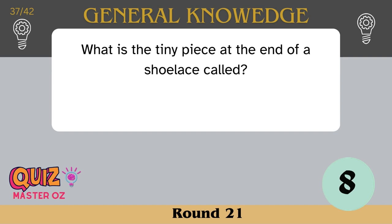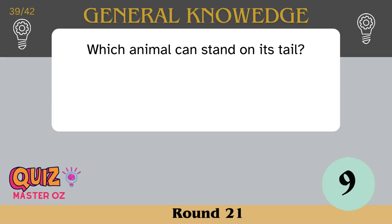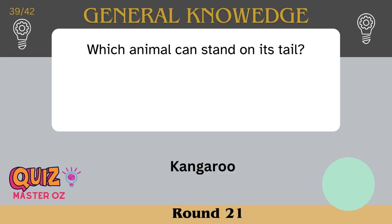What is the tiny piece at the end of a shoelace called? An aglet. What is the largest organ inside the human body? The liver. Which animal can stand on its tail? A kangaroo.